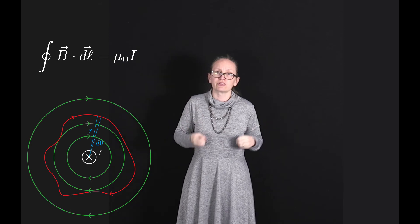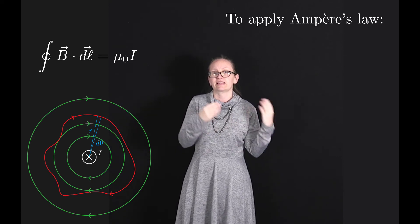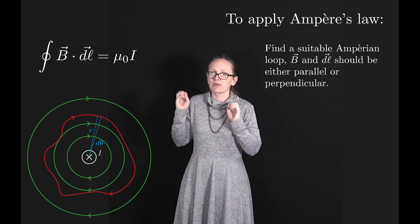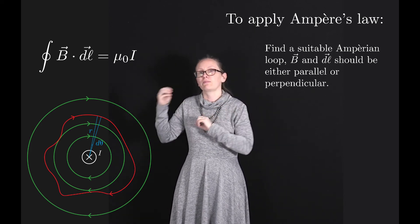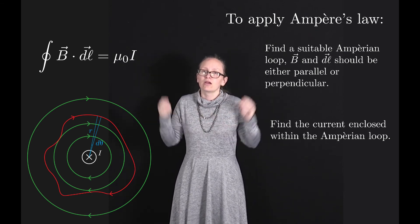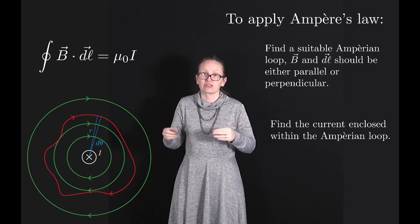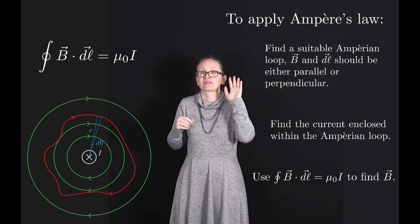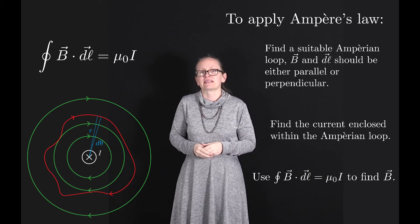The approach to calculate the magnetic field using Ampere's law is very similar to calculating the electric field using Gauss's law. The first step is to identify a suitable Amperian loop, exploiting symmetry so the magnetic field is parallel or perpendicular to the path. We then calculate how much current is enclosed within the loop — that's the I in the equation — and use ∮B·dL = μ₀I_enclosed to find B.